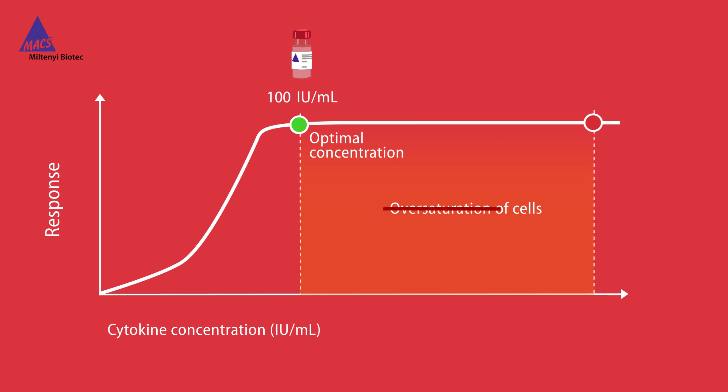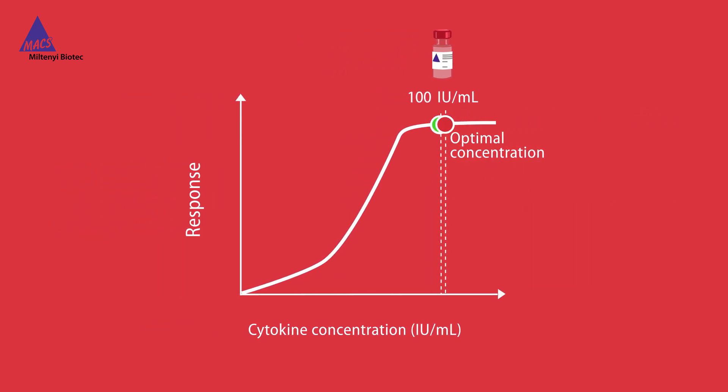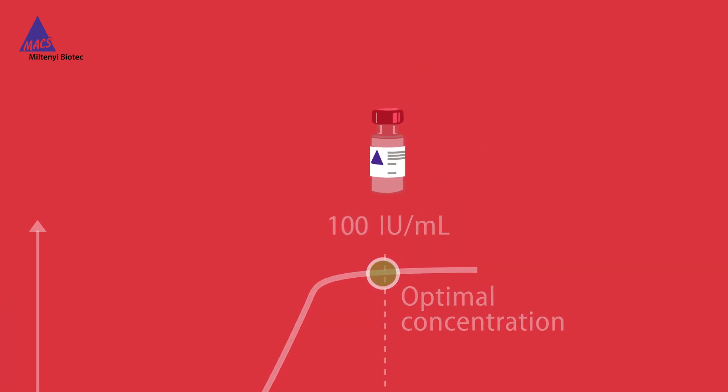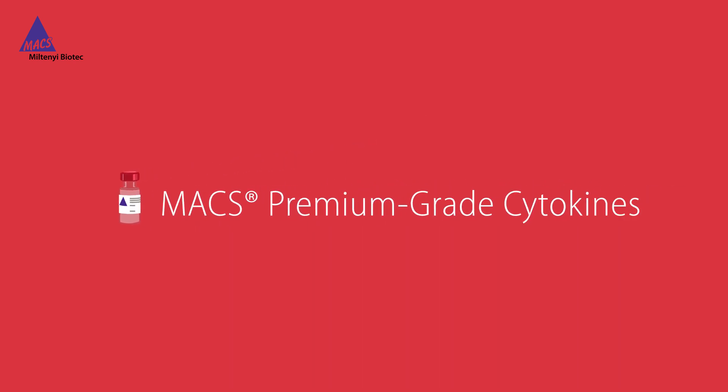Plus, you don't need to oversaturate your experiment anymore. This also means that you can use up to ten times less reagent. Choose lot-specific cytokine activity with MACS premium grade cytokines.